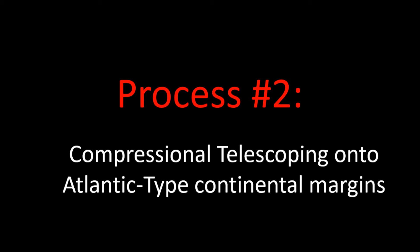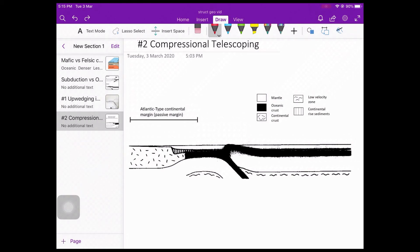Next, let us move on to the second obduction mechanism: compressional telescoping onto Atlantic-type continental margin. This term might sound complex, but let us break it down as we move along. This sort of obduction process might take place when the subduction zone and continental margin follows the geometry as seen here. The term Atlantic-type continental margin refers to the passive continental margin, which is a stable continental plate with relatively little earthquakes. In this case, the left-hand side is the Atlantic-type continental margin, and we will call this continental margin A. What we see at the end of this plate is an oceanic crust, and we will call the oceanic crust on the right-hand side B.